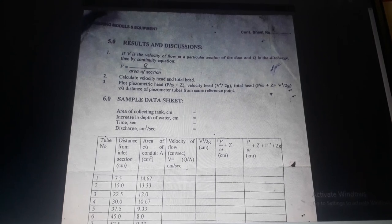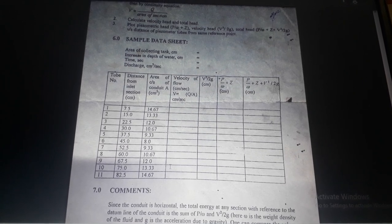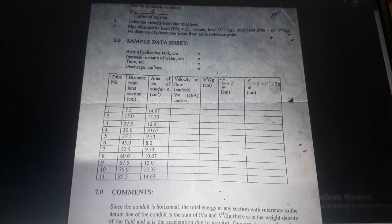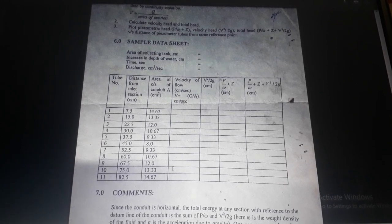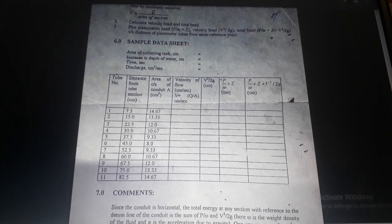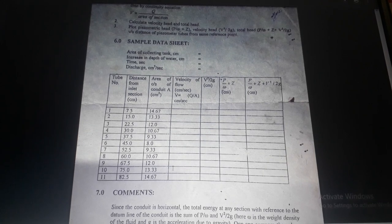Sample data sheet: area of collecting tank (cm²); increase in depth of water (cm); time (s); discharge (cm³/s). Table columns: tube number, distance from inlet section (cm), area of cross-section of conduit A (cm²), velocity of flow v = Q/A (cm/s), velocity head v²/2g (cm), piezometric head p/w + z (cm), total head p/w + z + v²/2g (cm).